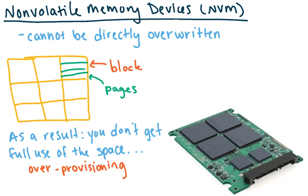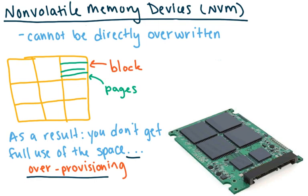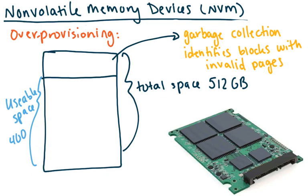As a result of this process, you don't actually get to use the full space. SSD and NVM producers over-provision — meaning they set aside a separate space in the actual memory that you can't use. It handles swappings where you have invalid pages. For example, if a block has only one valid page, it's a waste of a block. Designers created separate space for this, a technique called over-provisioning.